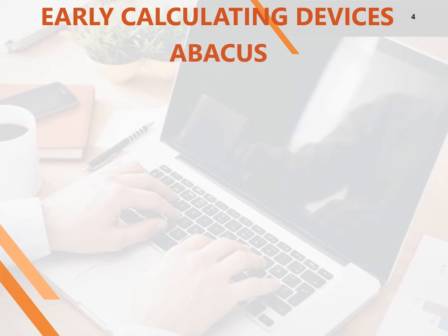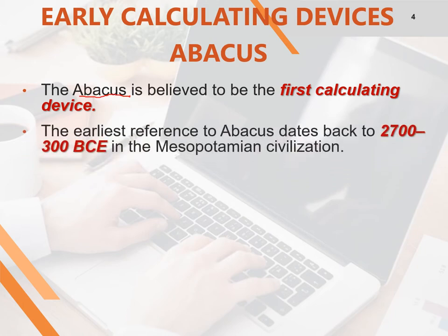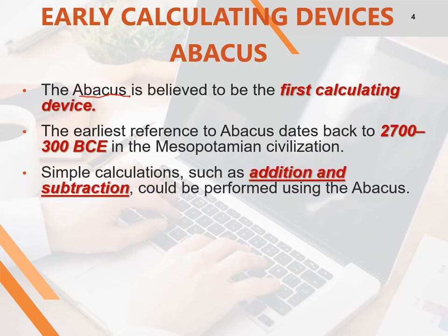Do you know what Abacus is? The Abacus is believed to be the first calculating device. The earliest reference to Abacus dates back to 2700 to 300 BCE in the Mesopotamian civilization. During 2700 to 300 BCE, before the current era, this Abacus was in use. Simple calculations such as addition and subtraction could be performed using the Abacus.